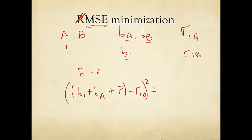This thing squared, plus the other error, which is b_1 plus b_B plus the average r_bar minus the actual r_1B rating squared.